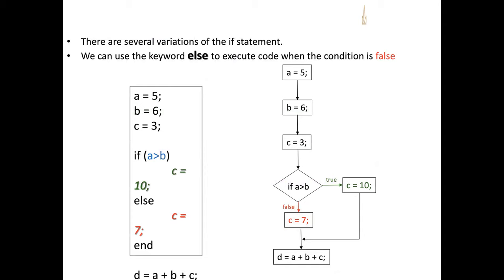We can also incorporate an else statement. Consider inputs where A equals 5, B equals 6, and C equals 3. The application evaluates the condition: if A is greater than B, we assign C a new value of 10. If not, our else statement assigns C the value of 7. After branching, the summation still occurs, but we now have new possible assignments of 10 or 7 for C.